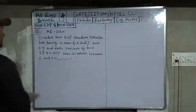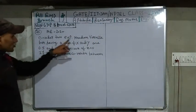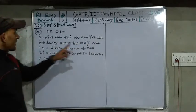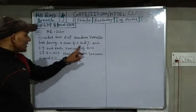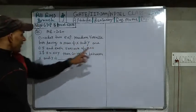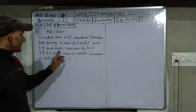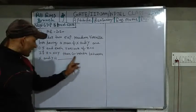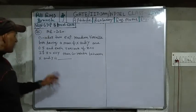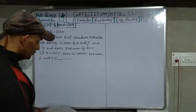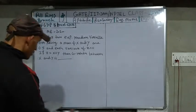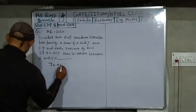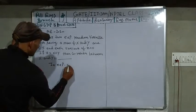The question is: Consider two exponential random variables X and Y, both having mean 0.5. If Z equals X plus Y and the variance of Z equals 0, find the correlation between X and Y. First, you must note a key property of the exponential distribution.